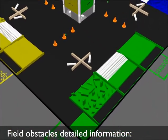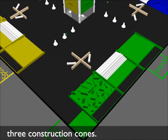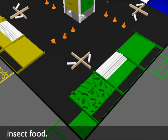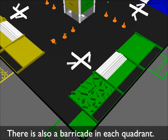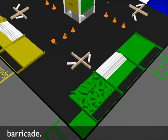Field obstacles detailed information: Each quadrant of the construction site has three construction cones. Under each cone is an additional piece of insect food. There is also a barricade in each quadrant. Two termites can be found feeding on each barricade.